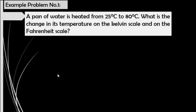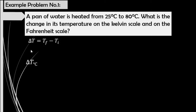Example problem number 1: A pan of water is heated from 25 degrees Celsius to 80 degrees Celsius. What is the change in its temperature on the Kelvin scale and on the Fahrenheit scale? To determine the change in temperature, we get the difference between the final temperature and the initial temperature. So delta T equals T-final minus T-initial. In Celsius: delta T equals 80 degrees Celsius minus 25 degrees Celsius, which equals 55 Celsius degrees.